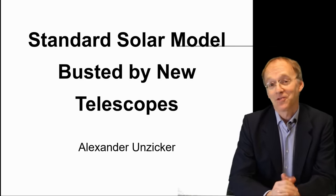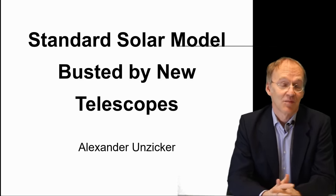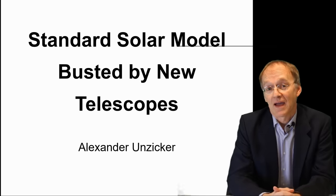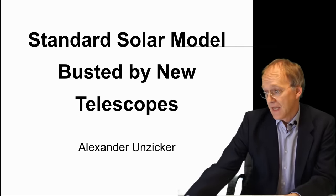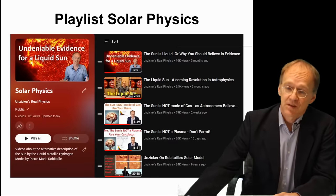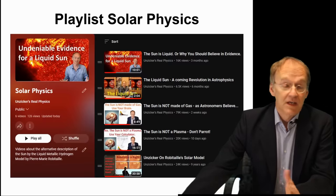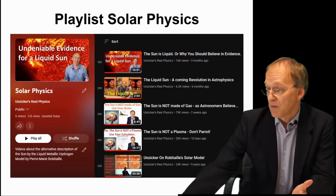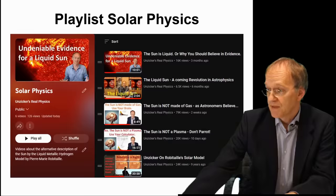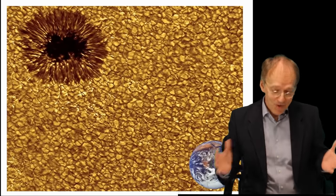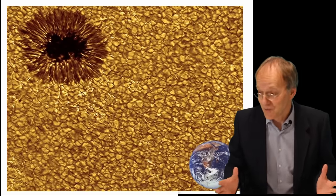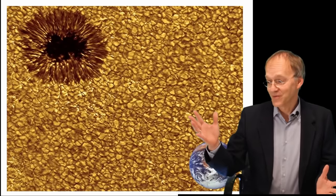Welcome to RealPhysics. Today I will show you that the standard solar model is falsified by our best telescopes. Now I have made a couple of videos about the Sun and the liquid metallic hydrogen model by Pierre-Marie Robitaille as an alternative to the standard solar model, but this is maybe the shortest proof that the standard model does not work and it's coming from these wonderful pictures of the Daniel Inouye telescope.